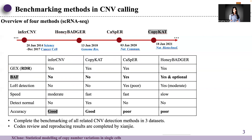There are four methods for copy number variation calling related tasks in single-cell RNA sequencing data. I benchmarked these methods on three datasets. Casper and HoneyBadger used B allele frequency information but the results were not so good. InferCNV and CopyCat perform well using expression information alone, but cannot detect loss of heterozygosity events.